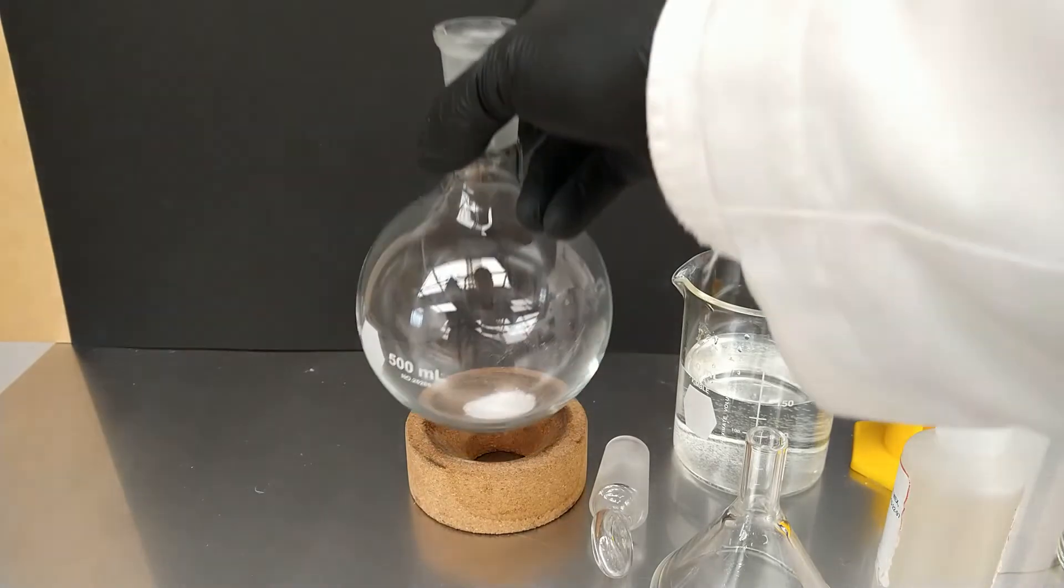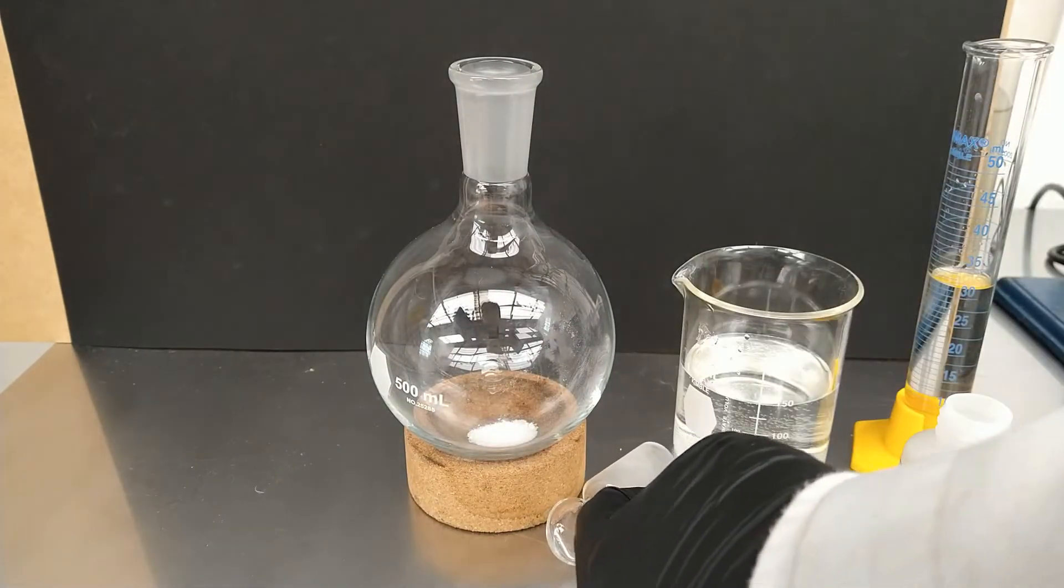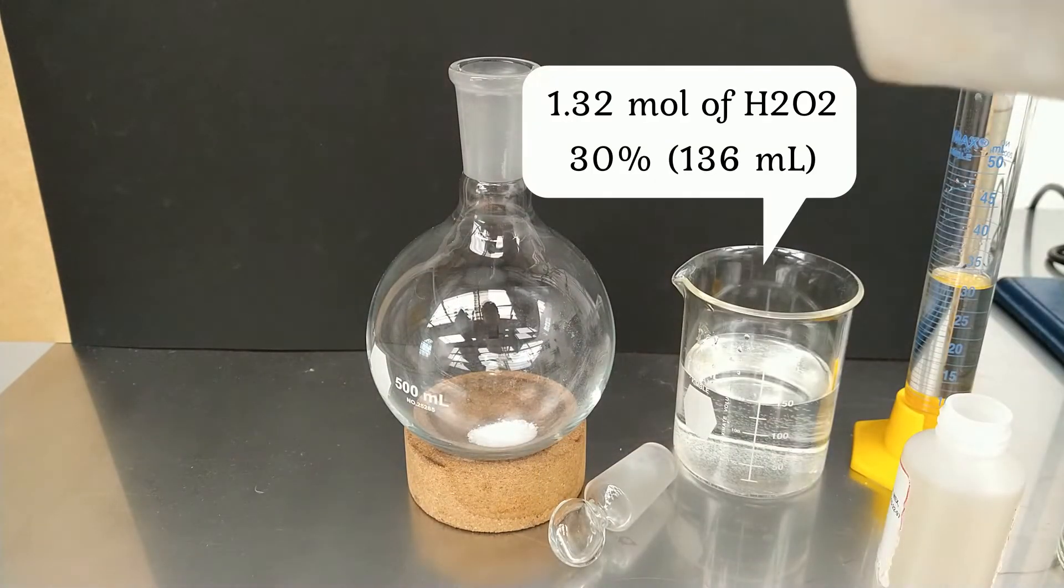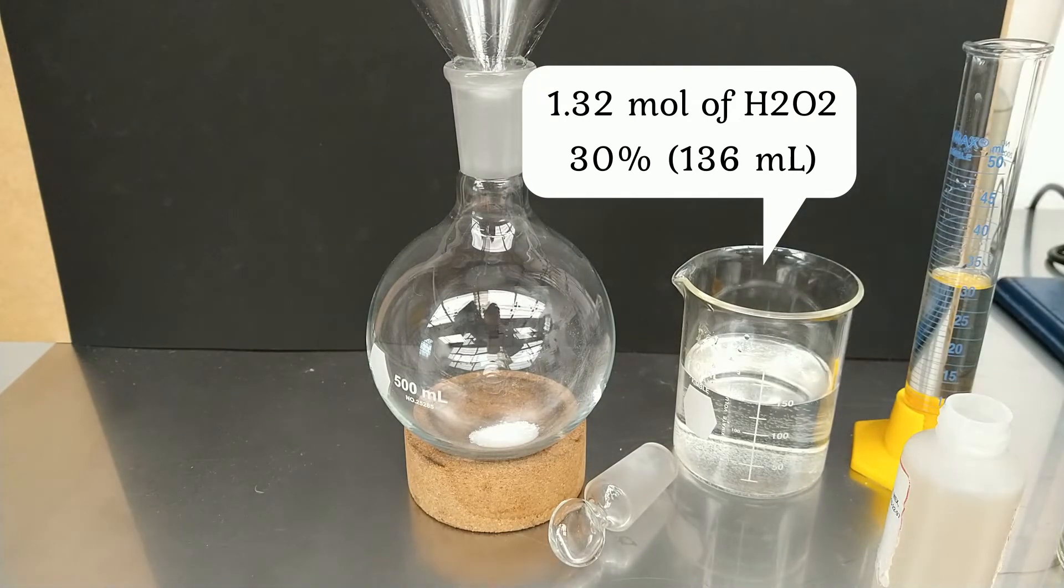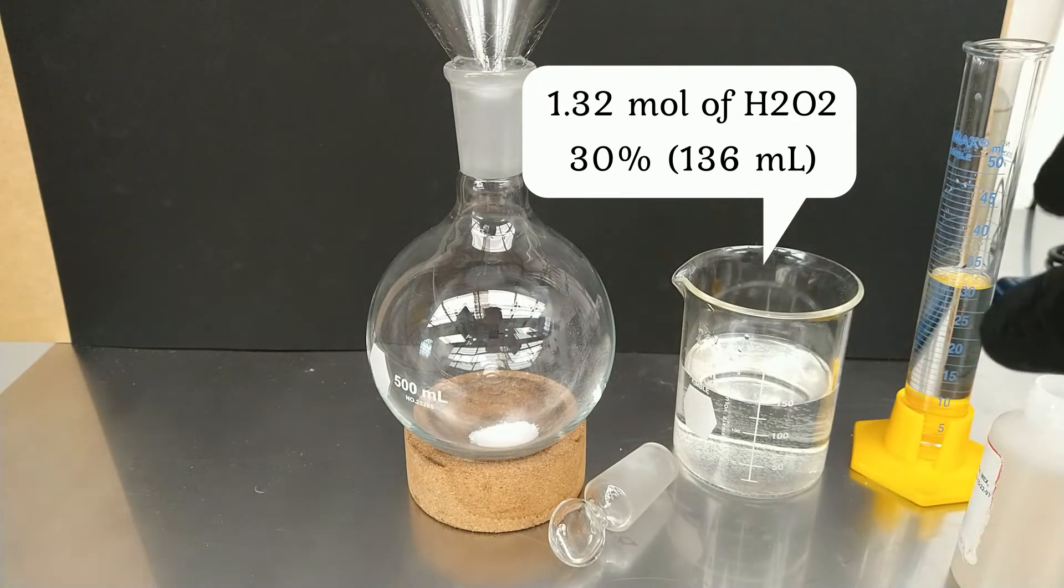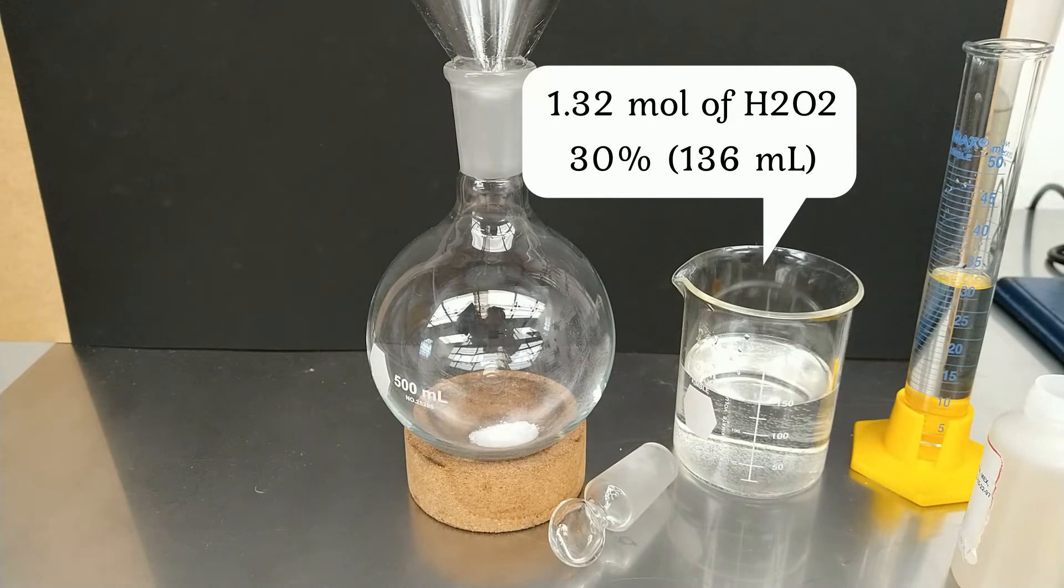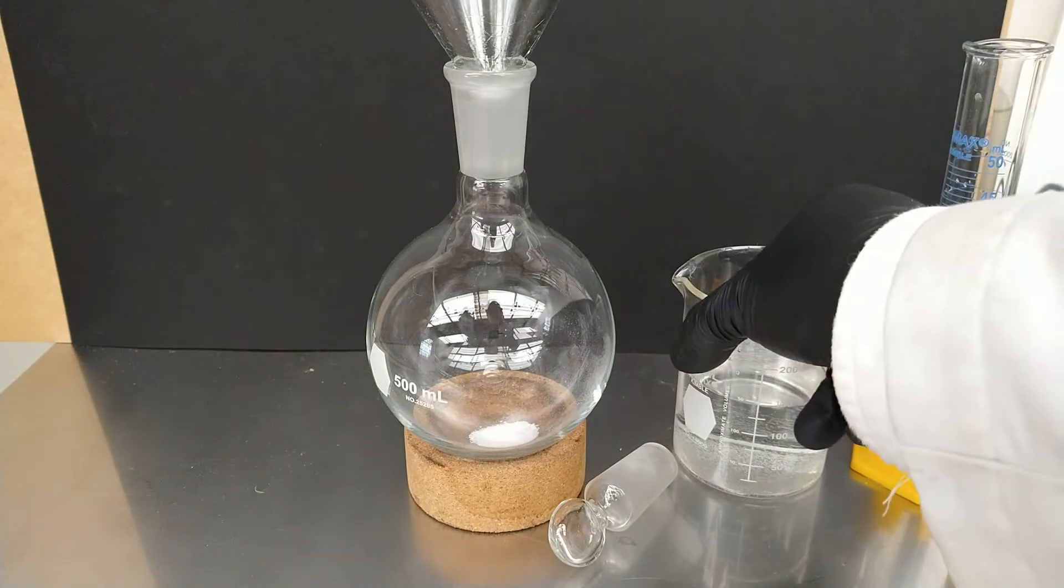To this same flask we are going to add 1.32 mol of hydrogen peroxide, 30%, that is equal to 136 ml of hydrogen peroxide.